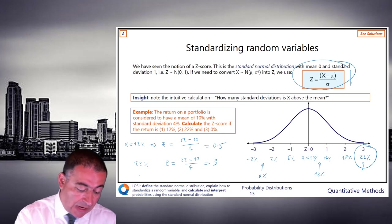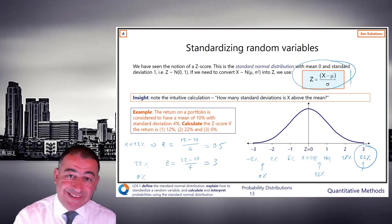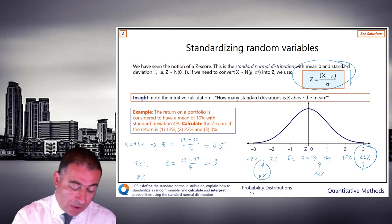And then, finally, 0%. Just because it's 0 doesn't mean the answer is going to be 0. 0, we can see, is down here. And we're looking at z of 0 minus 10 divided by 4.